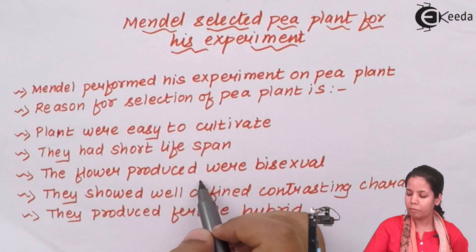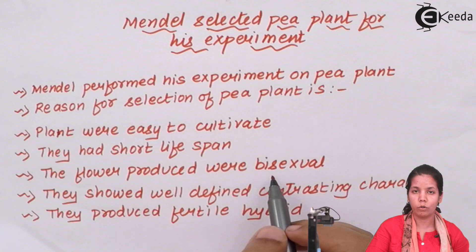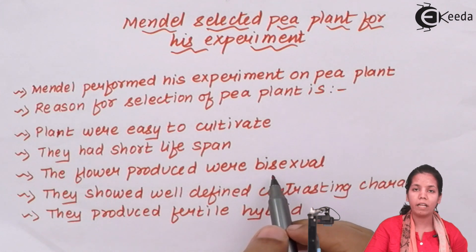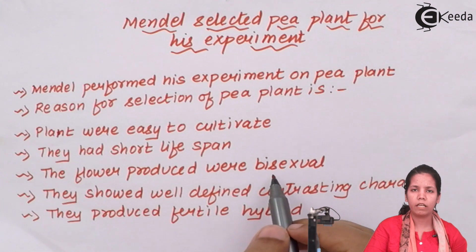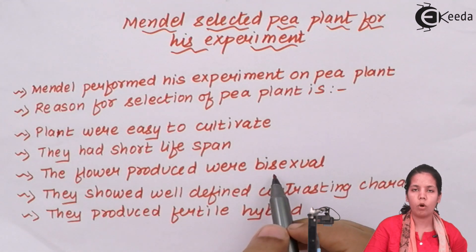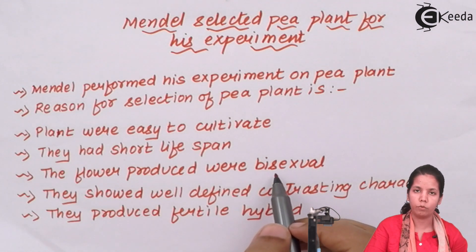Thirdly, the flowers produced were bisexual. This was really good for Mendel's experiment — a bisexual flower has both the anther and stigma present in the same flower. The transfer of pollen grains from the anther to the stigma and then to the female gametophyte would be possible quite easily, making the study of progeny very straightforward.